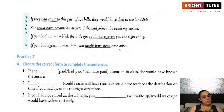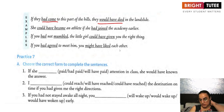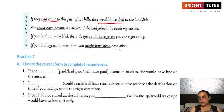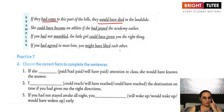She could have become an athlete if she had joined the academy earlier — there was a possibility if she had joined earlier. If you had not mumbled, the little girl could have given you the right thing. If you had agreed to meet him, you might have liked each other. The fulfillment of these conditions was possible, but now the time has passed.